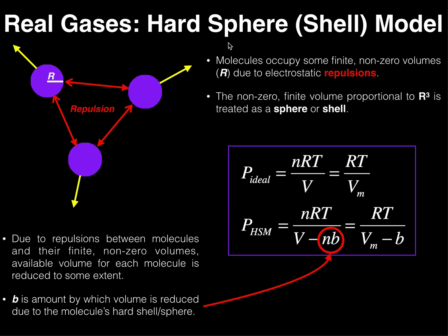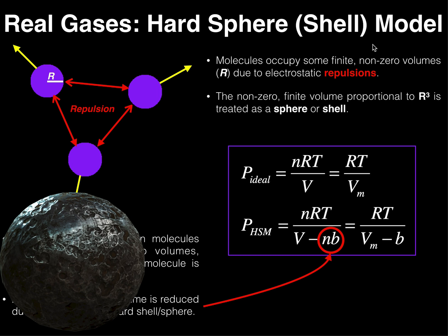The major difference between the hard sphere model and the ideal gas model is that the hard sphere model throws away the assumption that particles behave as point masses. In reality they don't behave as point masses. The hard sphere model assumes these particles still have mass but now they have a non-zero volume. Instead of being a point mass with absolutely no volume, it's like a cannonball — a sphere with a defined volume and very well-defined edges.